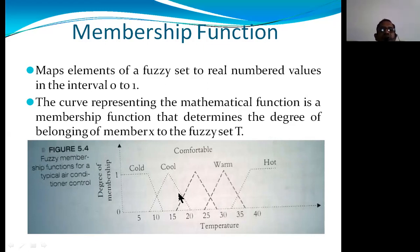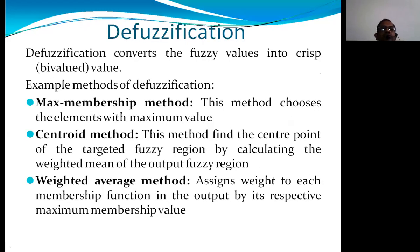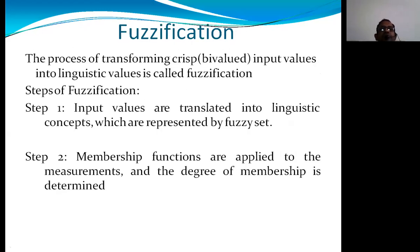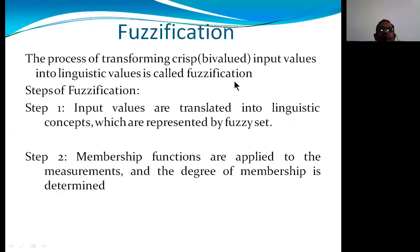The fuzzy set can be represented using a triangular membership function. Fuzzification is the process of transforming input values — which are bivalued, or exact crisp values — into linguistic variables or values. Fuzzification is the process of transforming crisp input values into linguistic values.